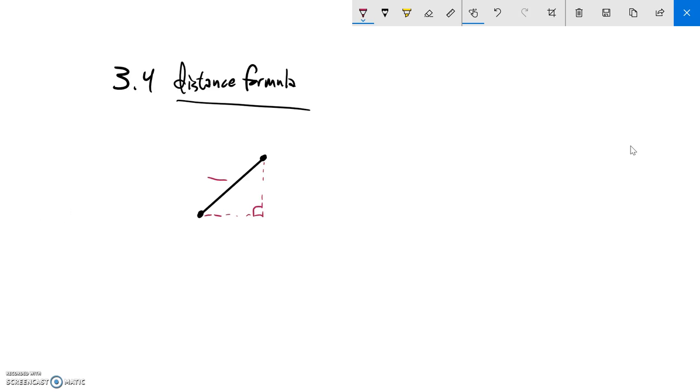We know that the relationship between these three sides using that Pythagorean theorem. So if this side is A, this side is B, and this side is C, we know that A squared plus B squared equals C squared. So if I know these two lengths, A and B, I can combine them using Pythagorean theorem to get C squared.